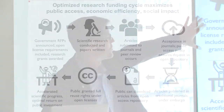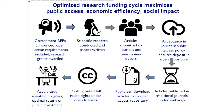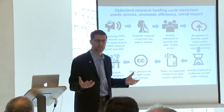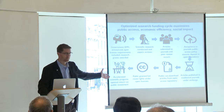This is the new model around open access. Governments are putting out money for research with an open license requirement built in — if you take this money, after an embargo period you will share what you build. All the same stuff happens: scientific research happens, they submit. They tell the journals upon submission: my hands are tied, I have this requirement, I have to share what I write. It goes into traditional journals under an embargo period — maybe six months or twelve months — but then after that, the public can download the articles from an open access repository. And in many cases, full reuse rights are granted, meaning there's a Creative Commons license on the articles. The result: anybody in the world can get access to that research, and science moves faster.